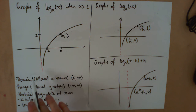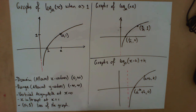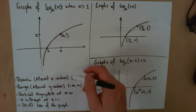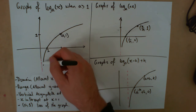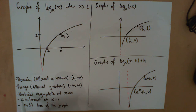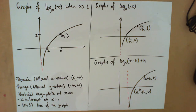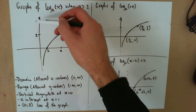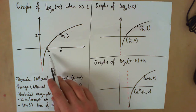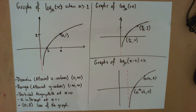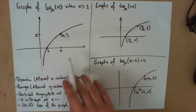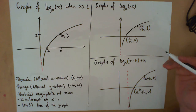The domain — all our allowed x values — goes from zero up to infinity, using a round bracket because we don't include zero due to our vertical asymptote. Our range — the y values we get out — is all real numbers, from negative infinity to positive infinity; there's no restriction on y values. We've got that vertical asymptote at x equals zero and the x-intercept at one, with that other point at (a, 1).